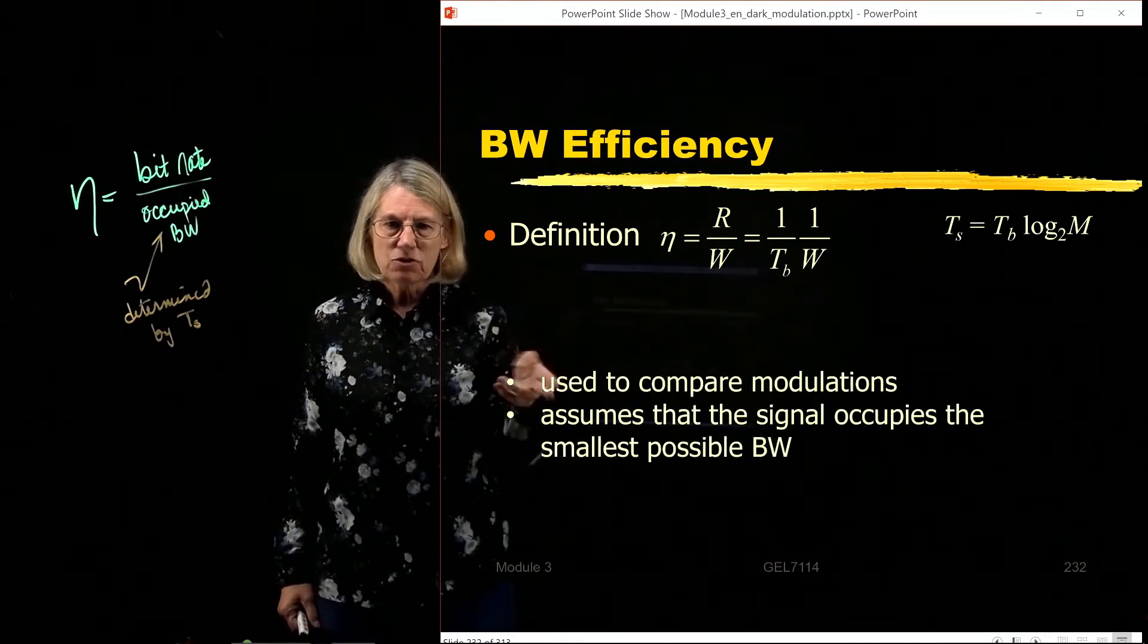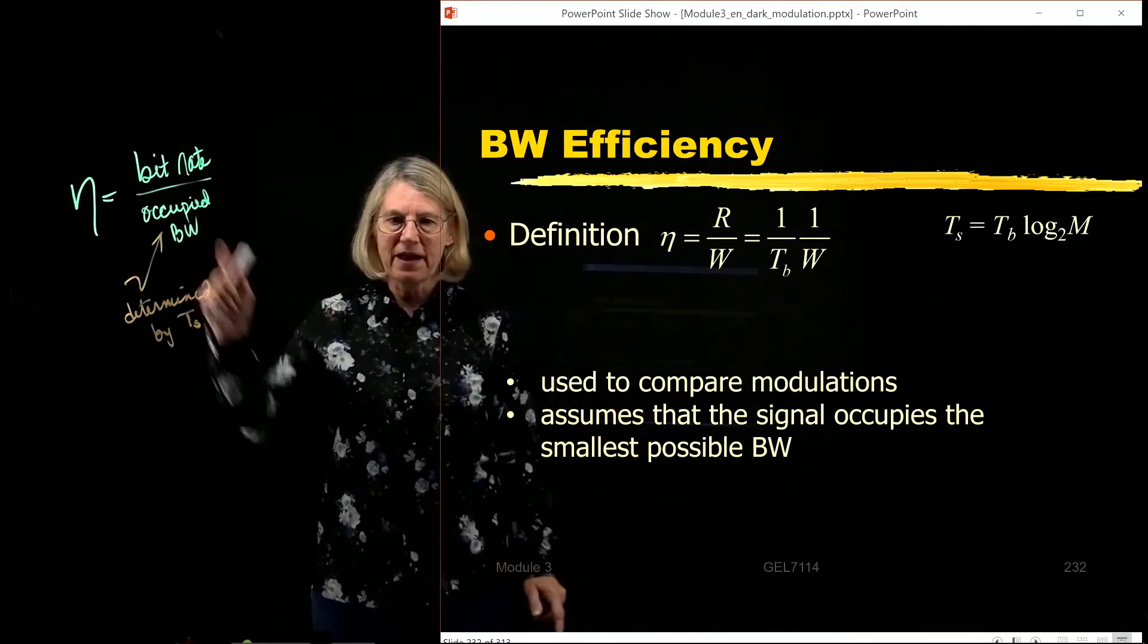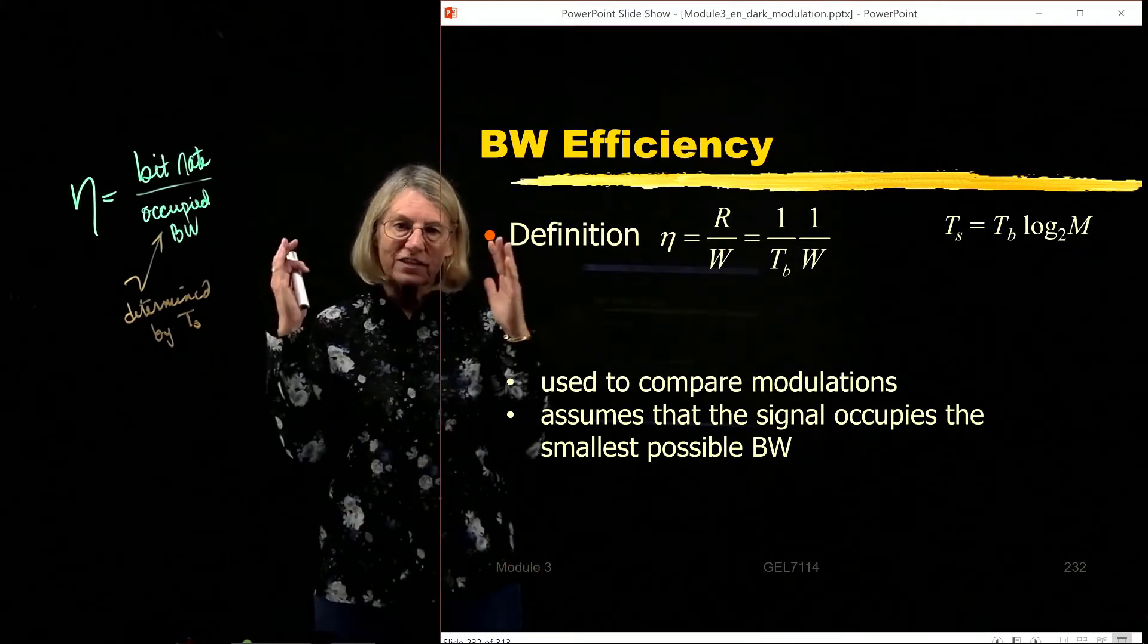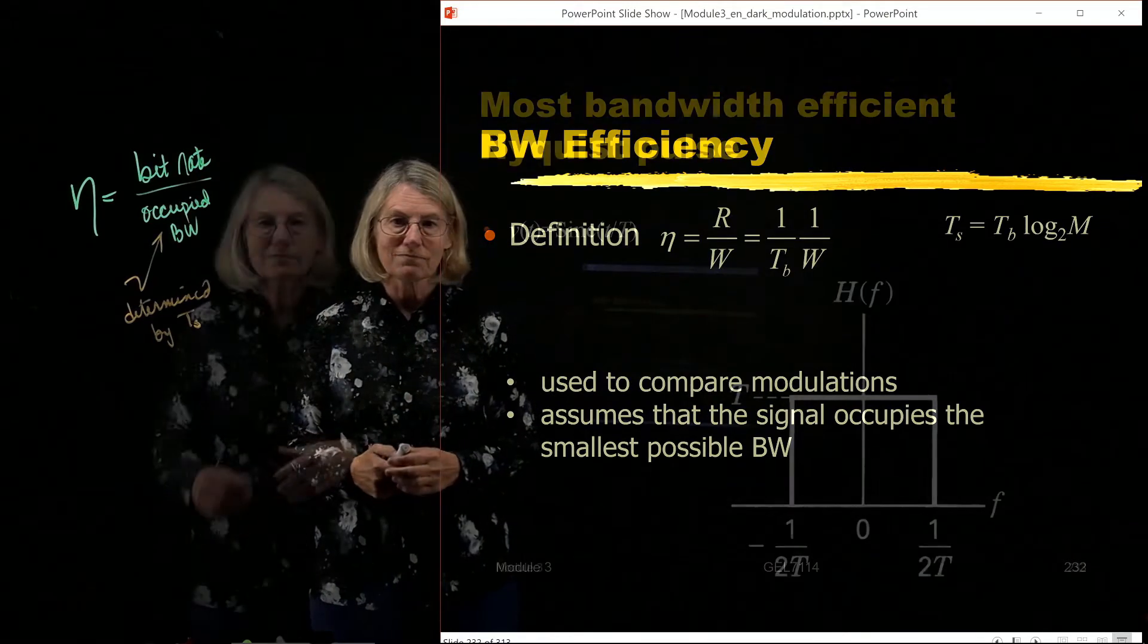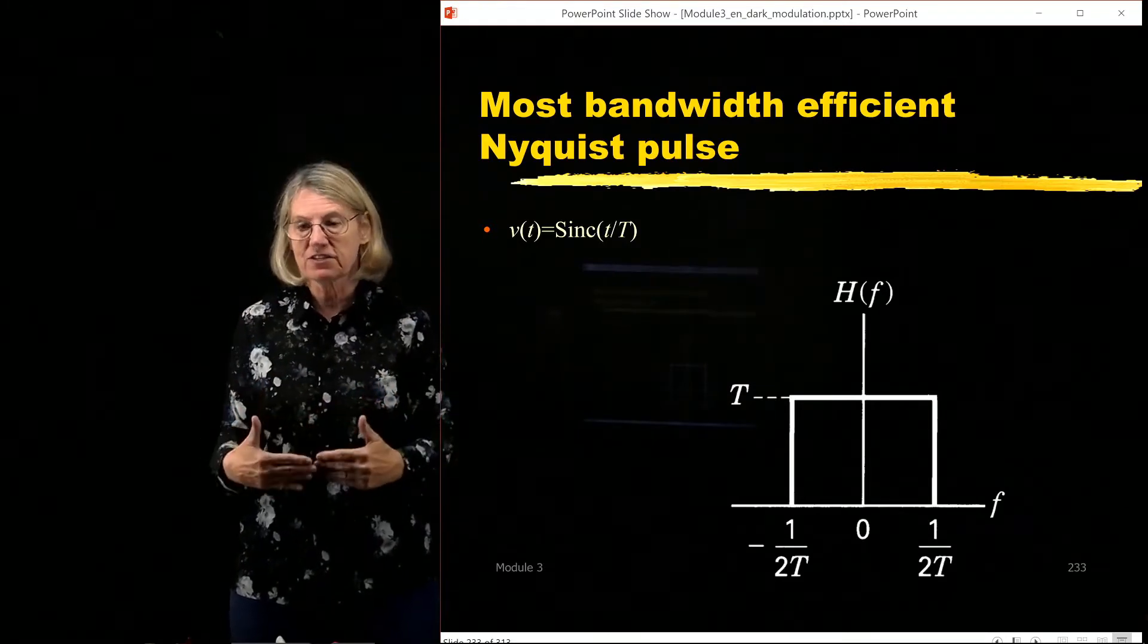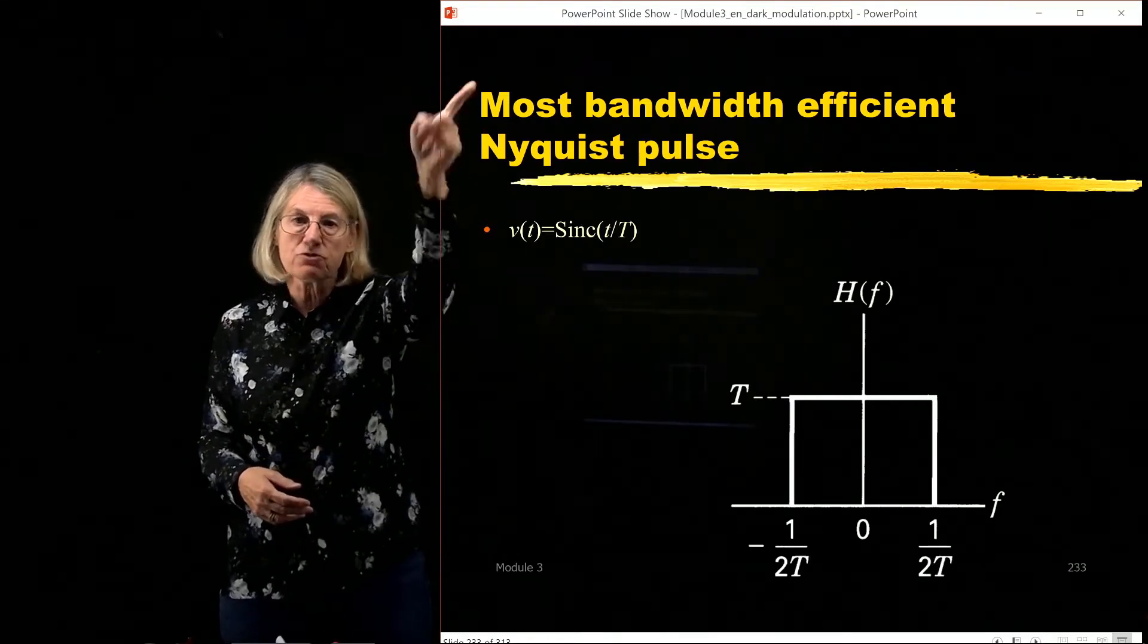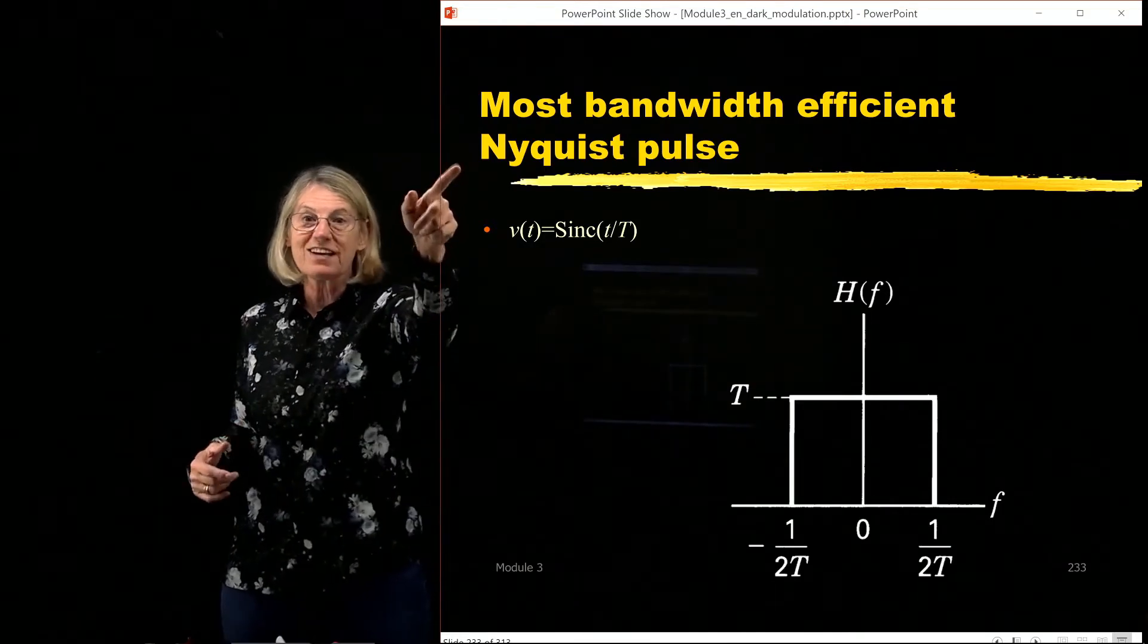So again, it's used to compare modulation. And again, I'm going to assume that the occupied bandwidth is as small as possible. The Nyquist ideal pulse shape is used in the time domain to make sure that in the frequency domain, I have a rectangular spectrum and it's as small as possible. When we derive an expression for the spectral efficiency of a given modulation format, I'm going to assume that modulation format is using the most bandwidth efficient pulse shaping possible. So it's using a Nyquist pulse shape.